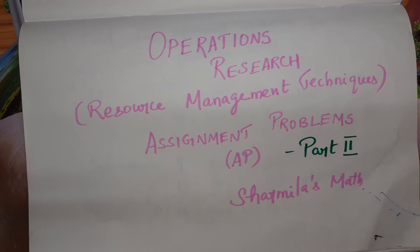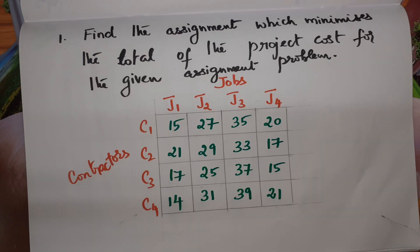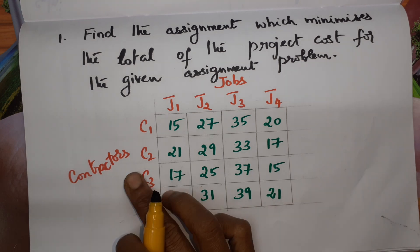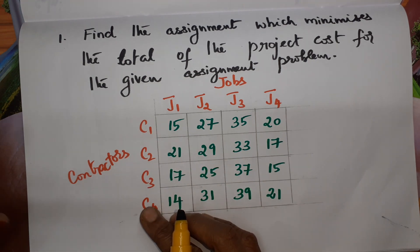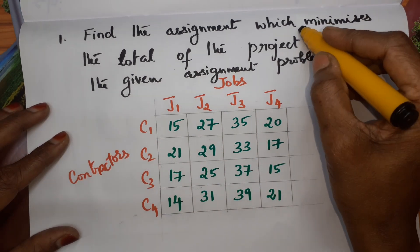Hello students. In this video I am going to teach you how to solve an assignment problem using the Hungarian method. I have already posted a video on assignment problems — kindly watch that before watching this. This is the problem given. We have to find an assignment which minimizes the total project cost. Four contractors are given and we have to assign jobs to these four contractors in order to minimize the total cost.